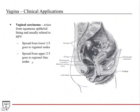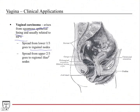Vaginal carcinoma arises from the squamous epithelial lining of the vagina, which is lined by non-keratinized stratified squamous epithelium. It's usually related to HPV. Lymphatic spread depends on location: if the tumor is from the lower one-third of the vagina, it spreads to the inguinal lymph nodes. If it's from the upper two-thirds of the vagina, it spreads to the regional iliac nodes.